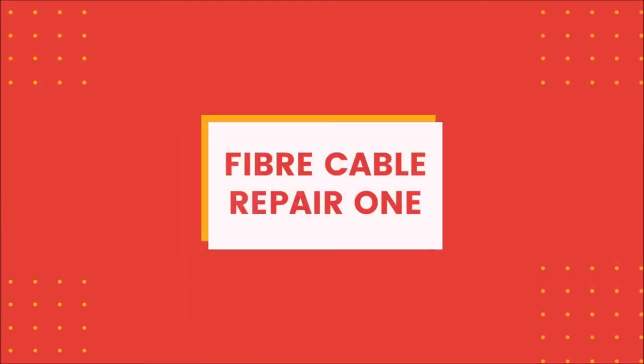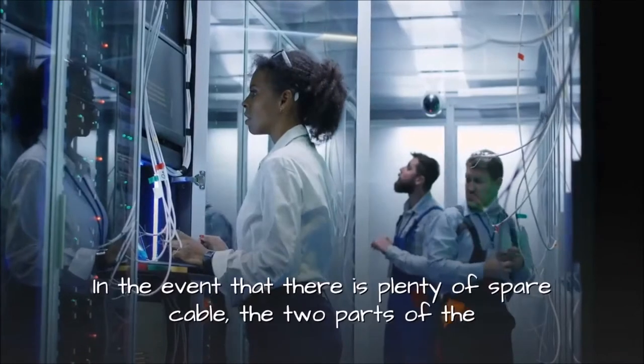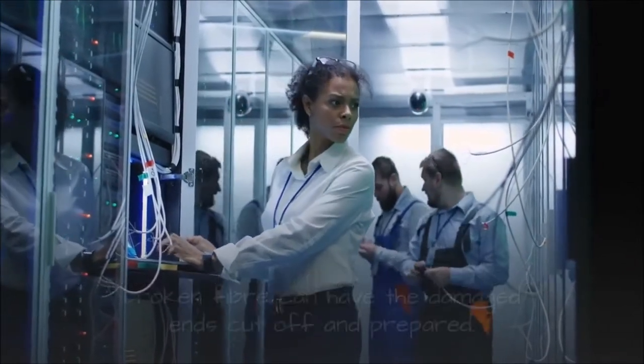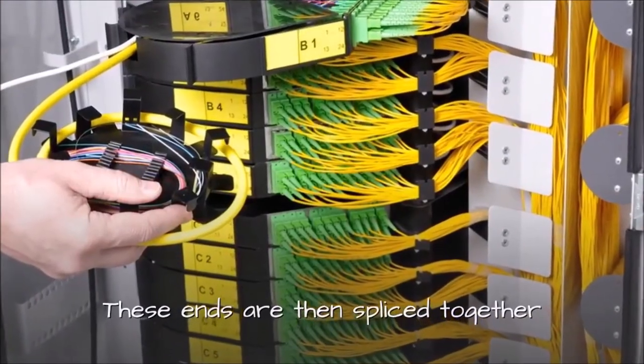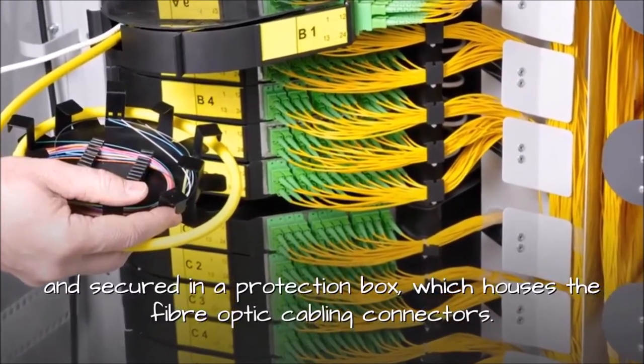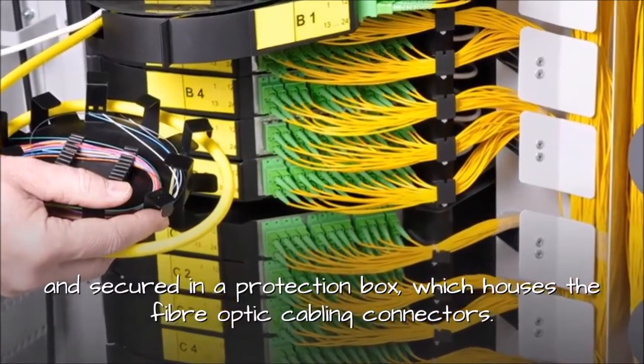Fiber Cable Repair One: In the event that there is plenty of spare cable, the two parts of the broken fiber can have the damaged ends cut off and prepared. These ends are then spliced together and secured in a protection box, which houses the fiber optic cabling connectors.